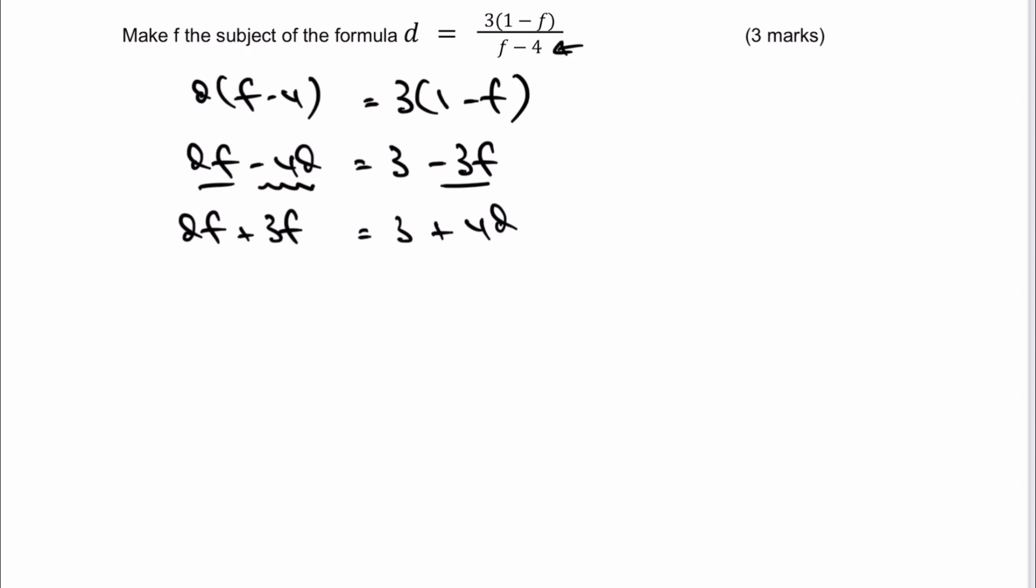Okay, so that's looking a little bit better. And really, the trick now with these particular types of questions is to factorize for the subject that we're looking for. So in this case, if I factorize for f, I'm going to get f times d plus 3, and that still equals 3 plus 4d.